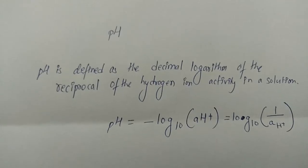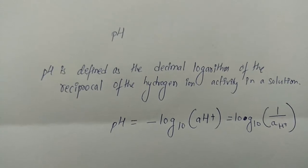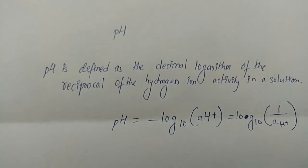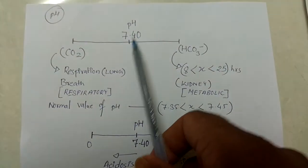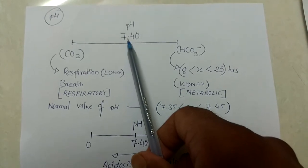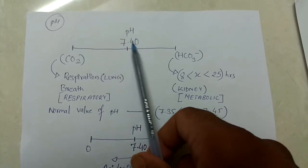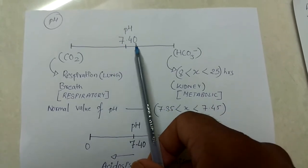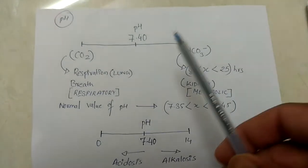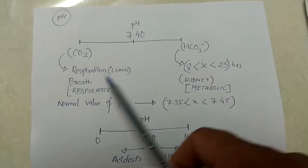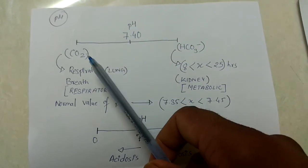With the ABG, pH is defined as the decimal logarithm of the reciprocal of the hydrogen ion activity in a solution. The normal pH of blood is 7.40. There are two things which affect the pH: CO2 and HCO3 ion.